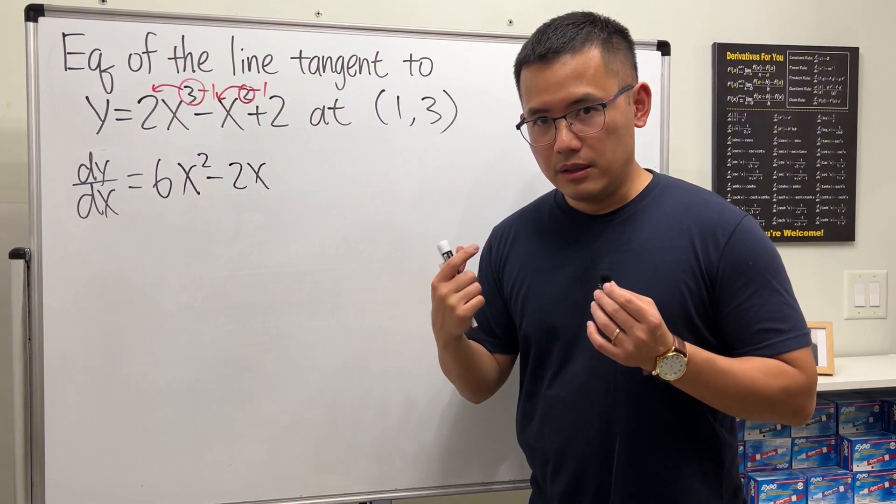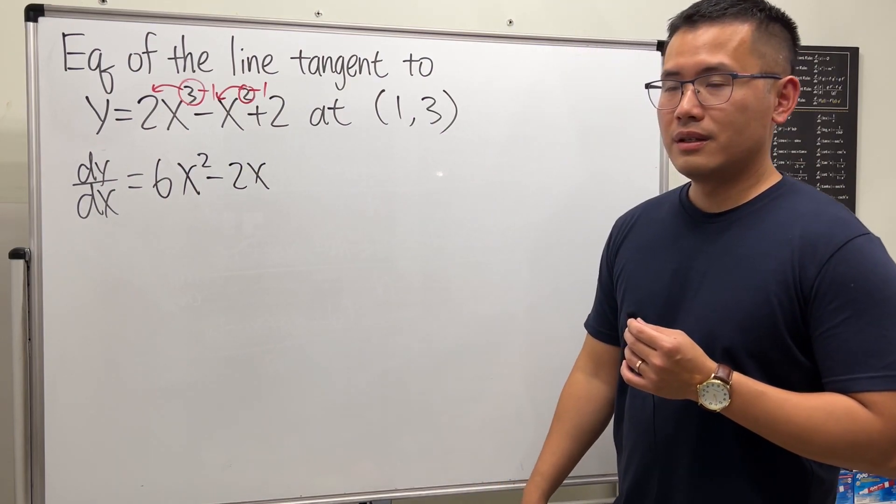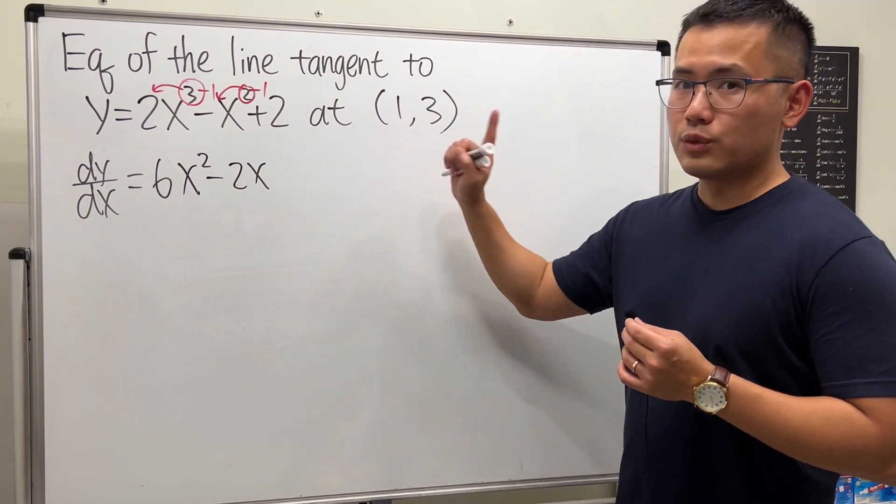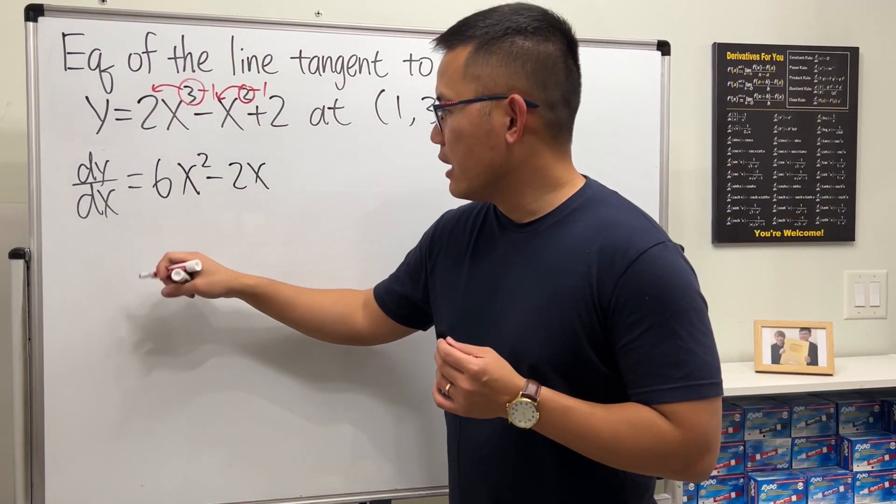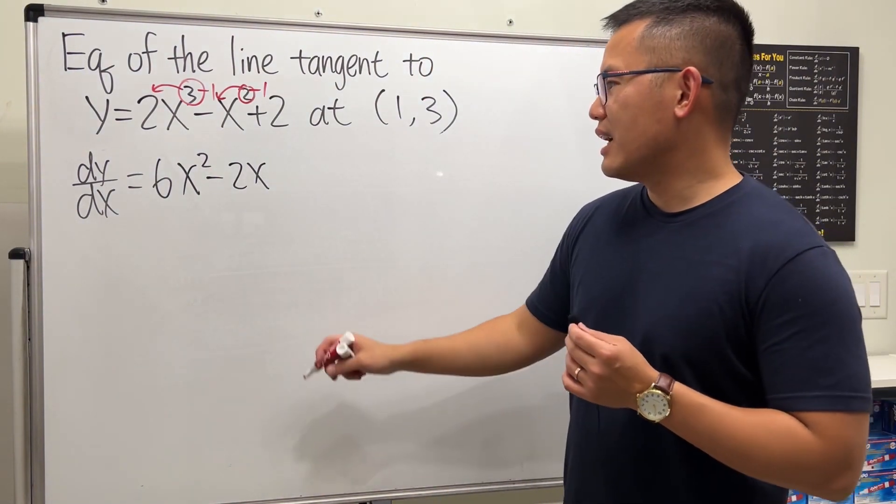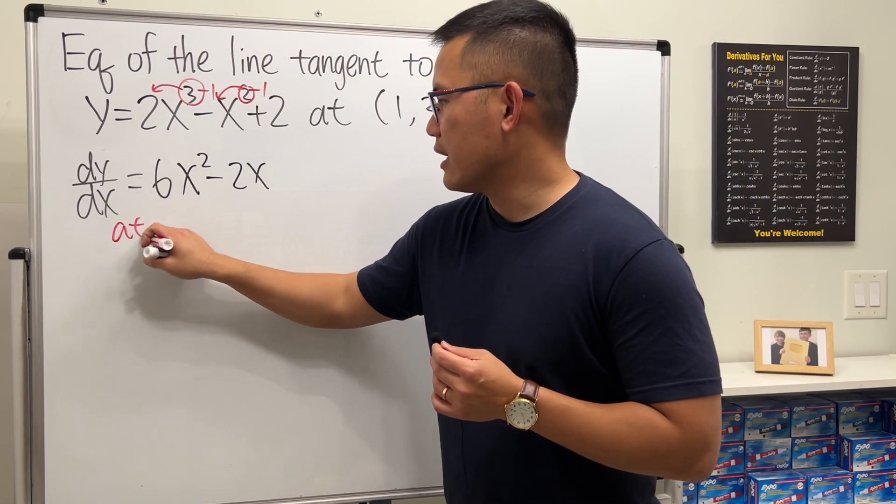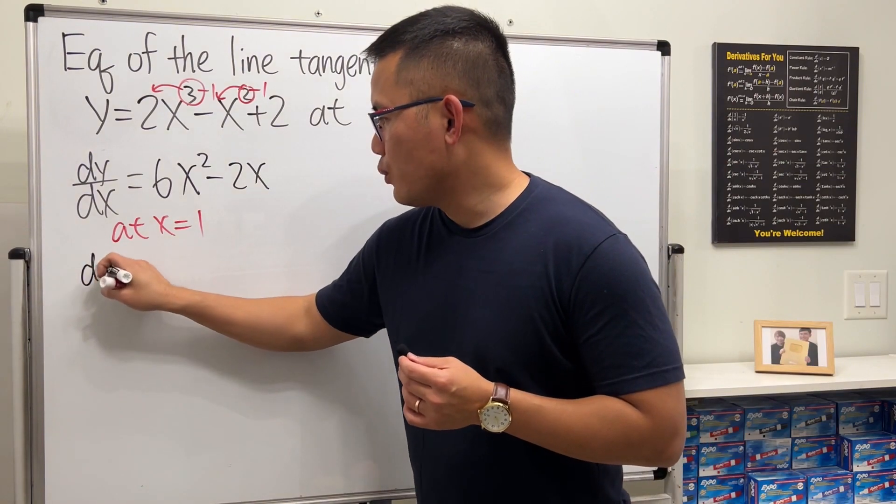But the slope is a number—we need the derivative at one point. Here the x value is one, so I have to let x equal one. Here's the notation you can use.